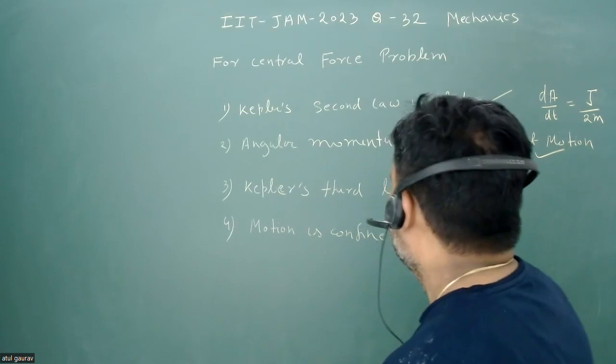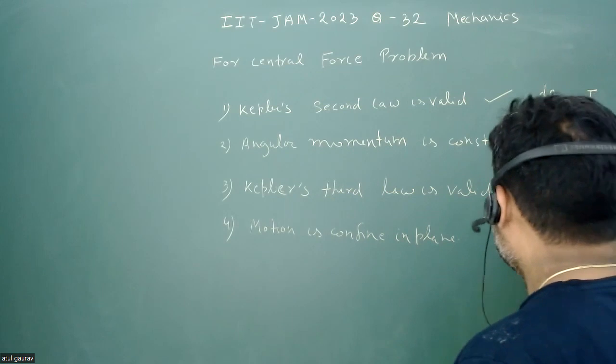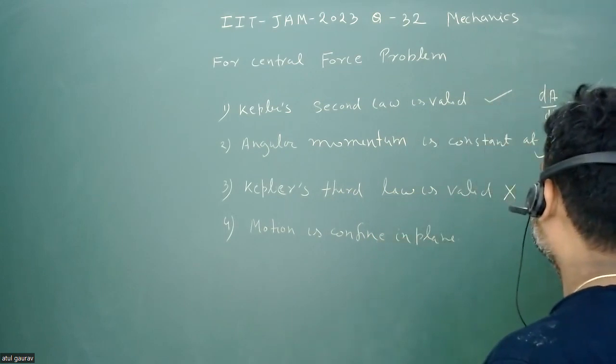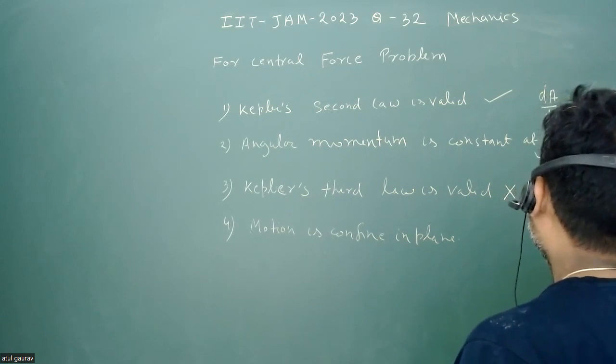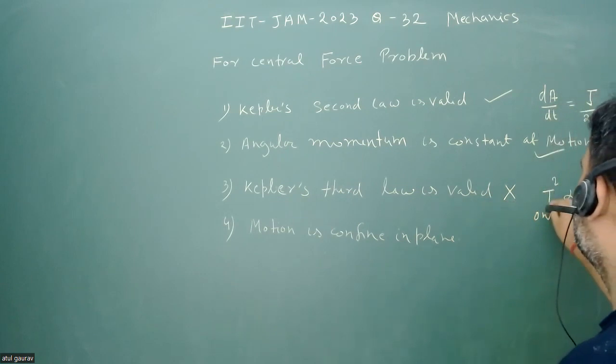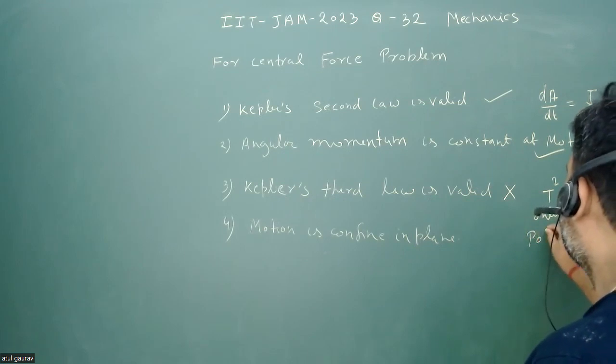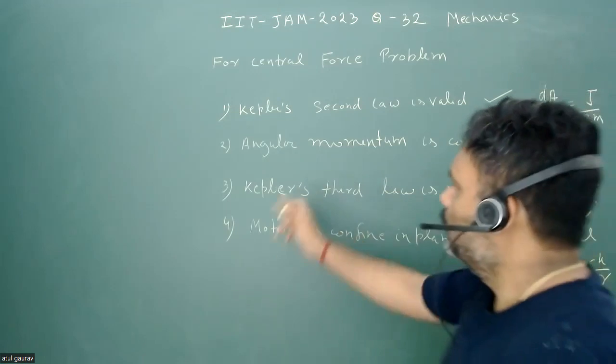And Kepler's third law is valid? No, this is not true because Kepler's third law is talking about the time period squared is proportional to semi-major axis cubed and this is only for only for potential v(r) is equal to minus k by r.